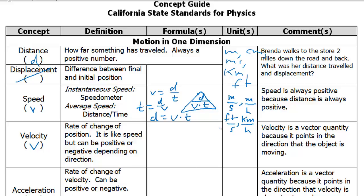Velocity is a little bit more specific than speed. It's the rate of change of position. It is like speed but can be positive or negative depending on direction. So the equation really looks the same for velocity, and the units are also the same.